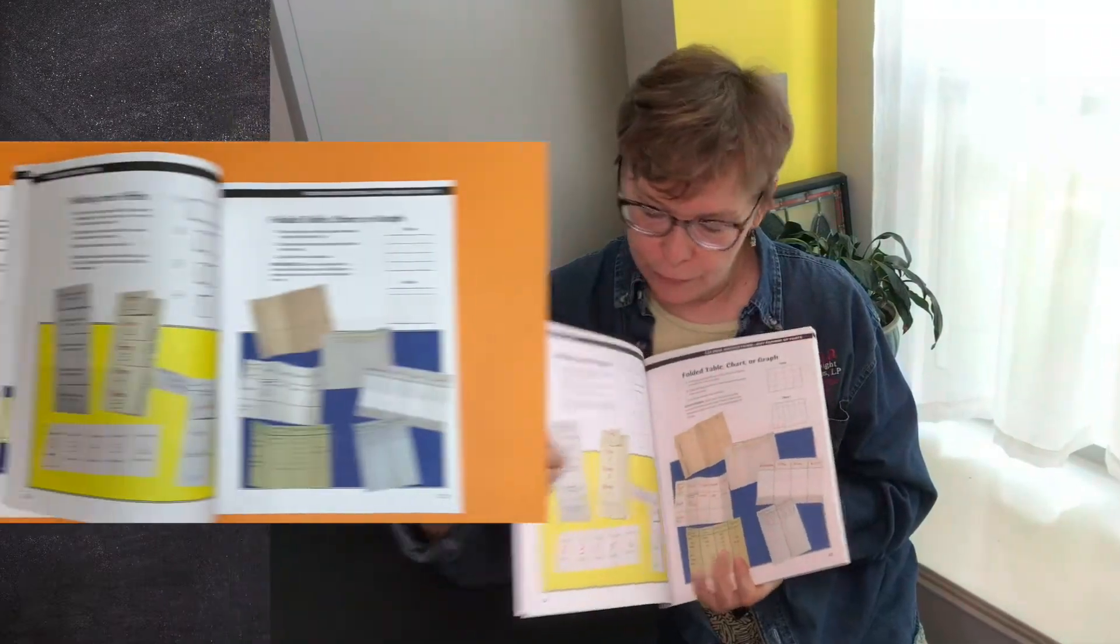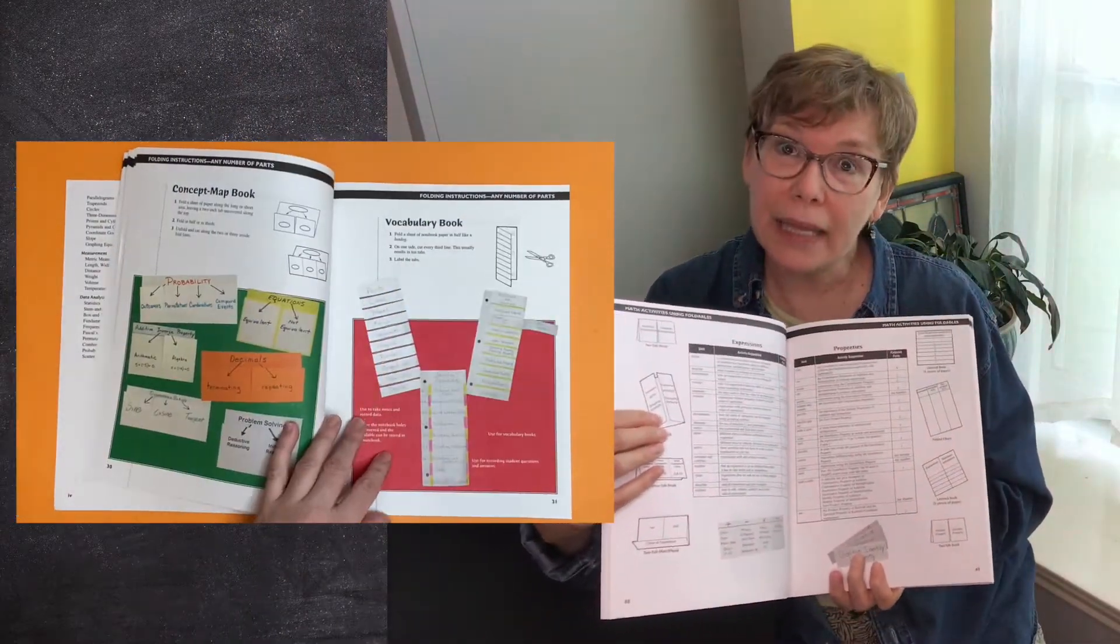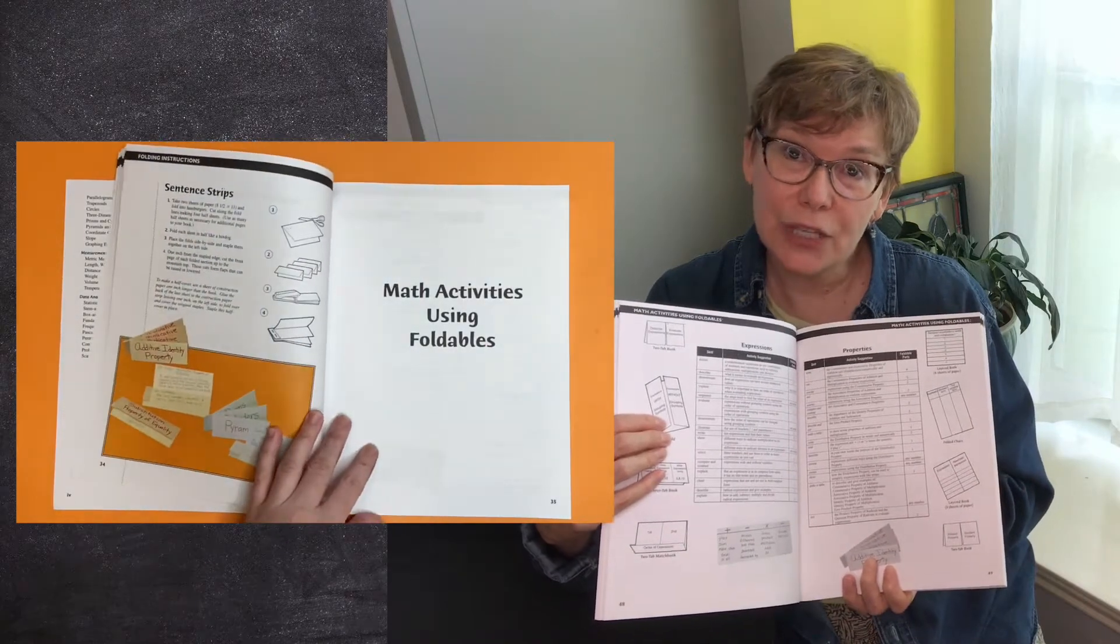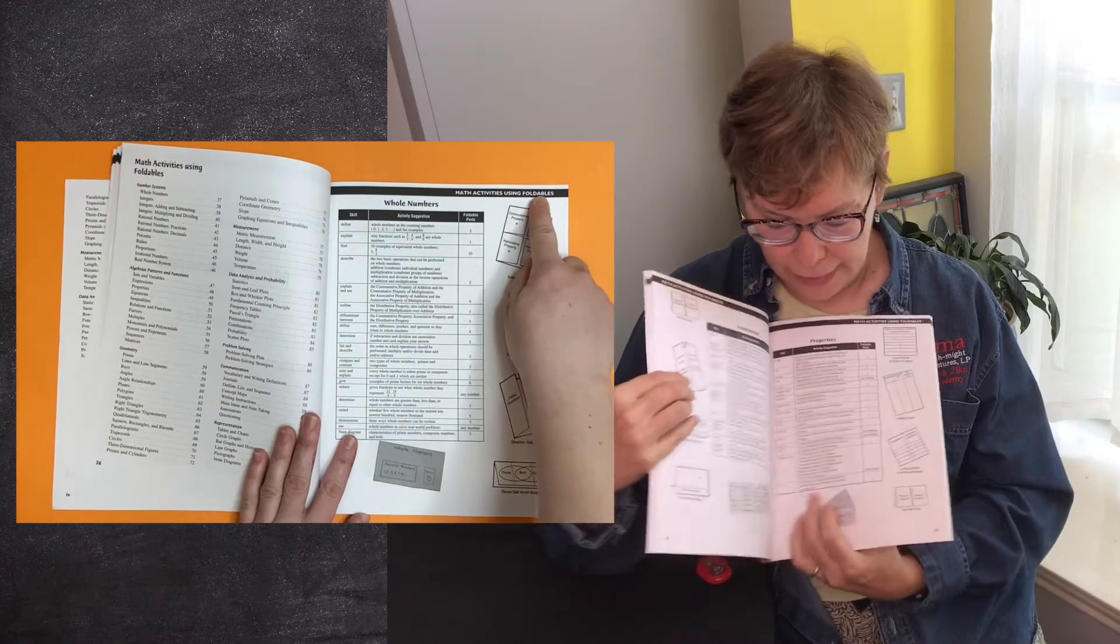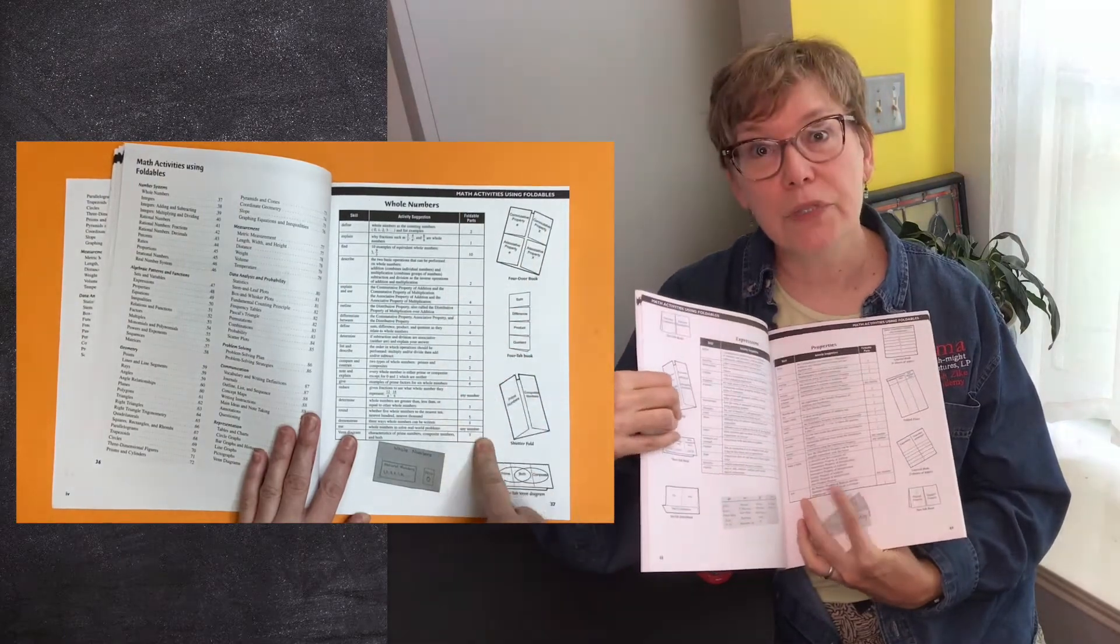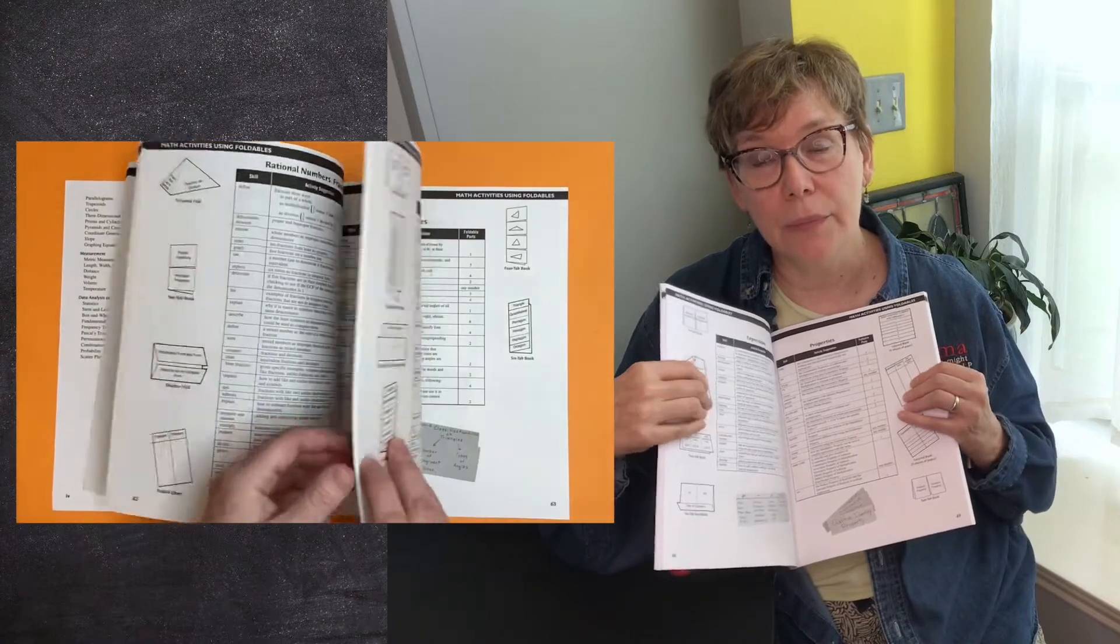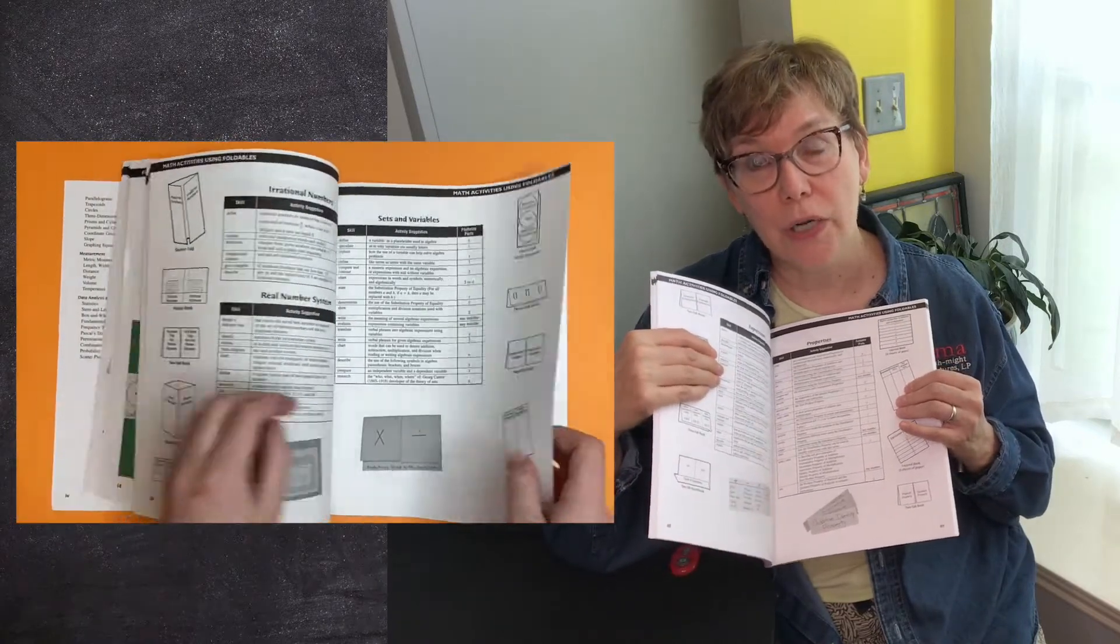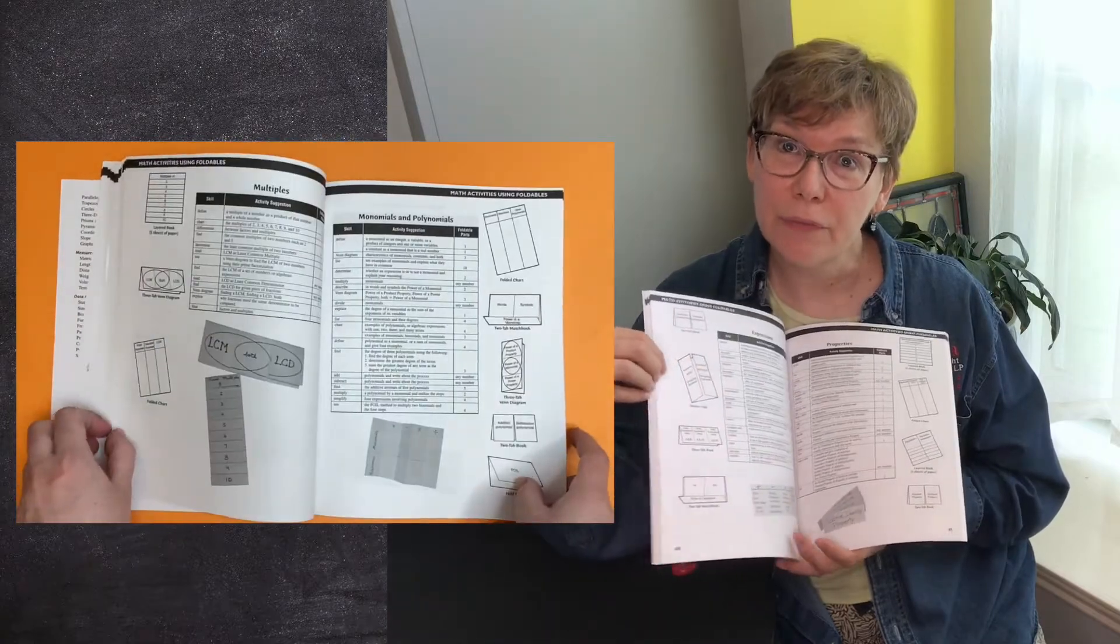The second section and the bulk of the book is about adapting activities for foldables and making use of them in your instruction. You'll see different charts here. There is one column for skills, another for activity suggestions, and the third column shows the number of foldable parts. That's the number of tabs that will be at the front of the foldable.